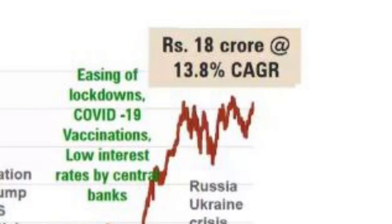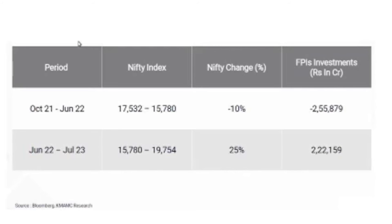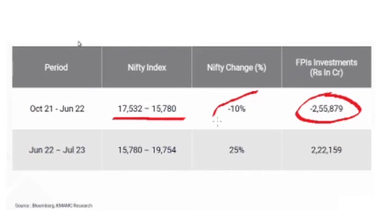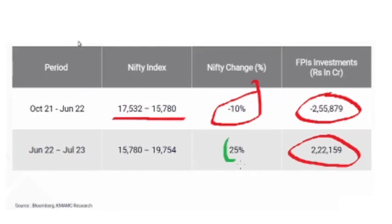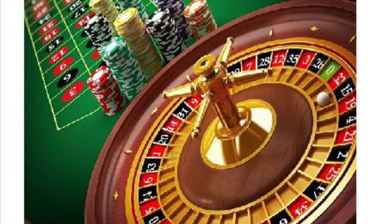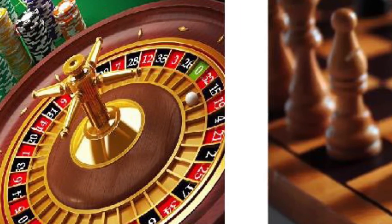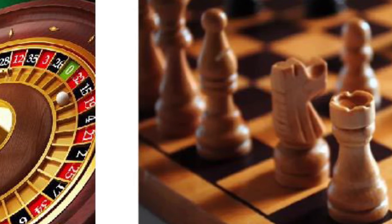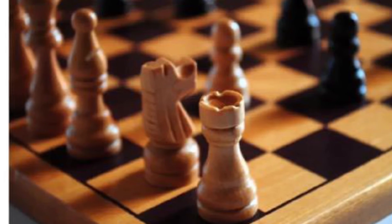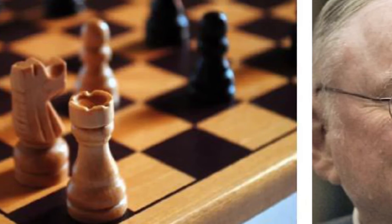Selling is a very tough decision. Look at what the FIIs have learned: when foreign institutions sold ₹2,50,000 crore, markets fell 10%, but when they bought ₹2,20,000 crore, markets went up 25% — so their selling decision was a very expensive one. If you have made money in the short term, it is pure luck. If you have made money in the medium term, it is skill. And if you have made good money in the long term, it is temperament.